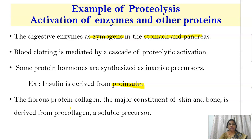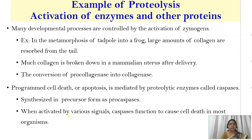The fibrous protein collagen, which is the major constituent of skin and bone, is derived from pro-collagen, a soluble precursor. Pro-collagen is present in large amounts in the tail of a tadpole; by breaking down pro-collagen, collagen is obtained. This collagen is needed for the development of the frog, and it is also broken down in the mammalian uterus after delivery. This conversion is done by proteolytic cleavage.